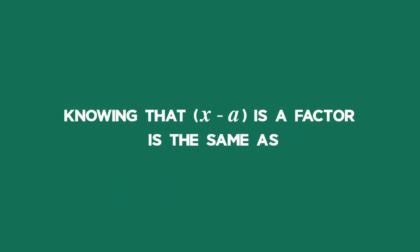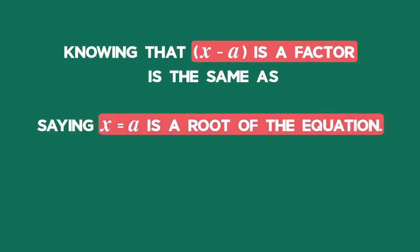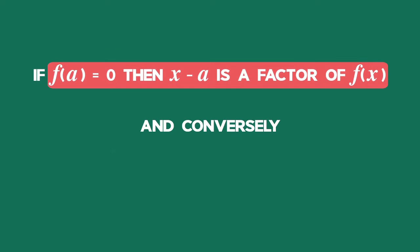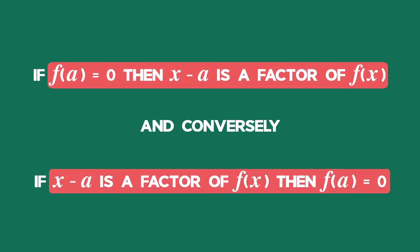Knowing that x minus a is a factor is the same as saying x equals a is the root of the equation. If f of a equals 0, then x minus a is a factor of f of x. And conversely, if x minus a is a factor of f of x, then f of a equals 0.